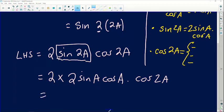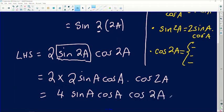Now, once we have done this, 2 times 2 gives us what? That gives us 4. And then you're going to have 4 sin A cos A multiplied by cos 2A. This is basically what we have so far.